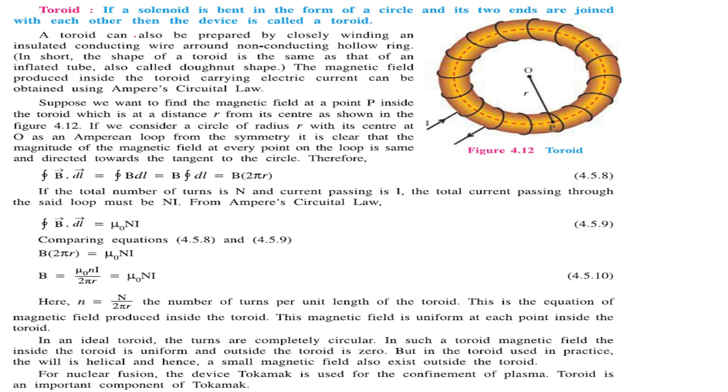Toroid - what is a toroid? If a solenoid is bent in the form of a circle and its two ends are joined to form a regular closed form, then this device will be known as a toroid.